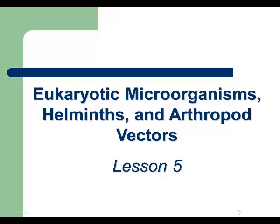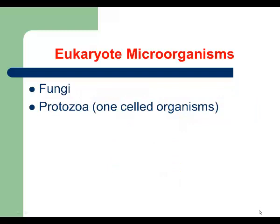Lesson 5. In this lecture we are going to talk about eukaryotic microorganisms — fungi and protozoa — and after that we'll talk about helminths, meaning parasitic worms, and at the end of this lecture we are going to talk about arthropod vectors. We are going to cover two groups of eukaryotes: fungi and protozoa.